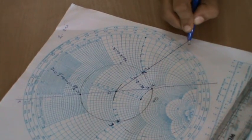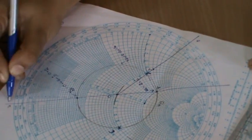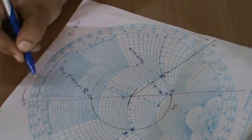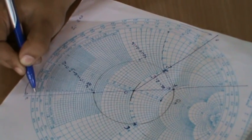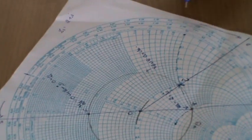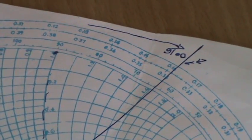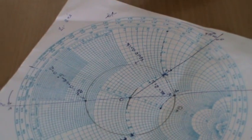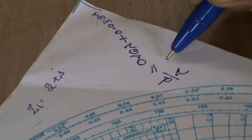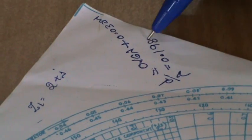Now the d by lambda value is given by finding the distance between this point till here. Let me find the point. Here it is 0.038 wavelength and I start from here, it is around 0.16. Always remember in the Smith chart distances are calculated as wavelengths. So d by lambda equals 0.16 lambda plus 0.038 lambda, which comes around 0.198 lambda.